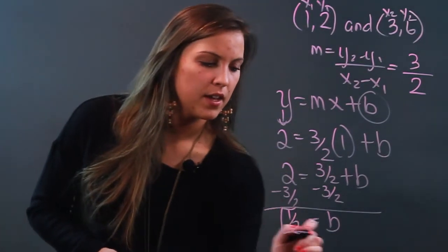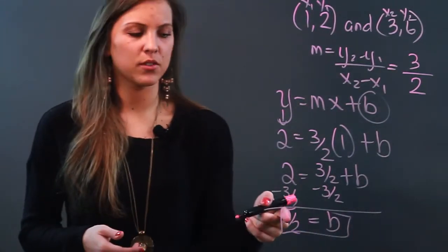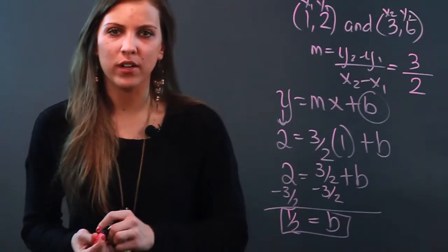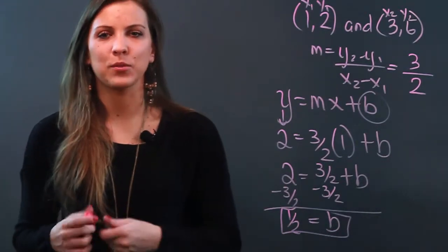I recognize that three halves is the same as one and a half, so I'm left with one half. That means b, or my y-intercept, is one half. That is how you use two coordinate points to find the y-intercept or b.